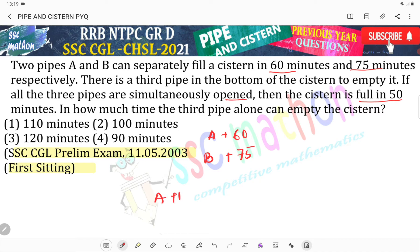A plus B minus C. C means that it is emptying. This third pipe is emptying the cistern in 50 minutes.